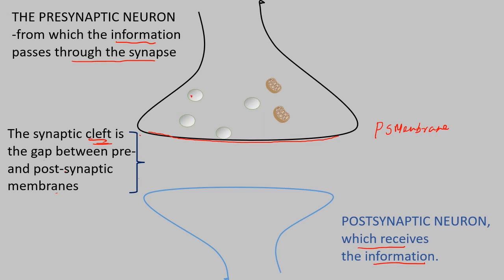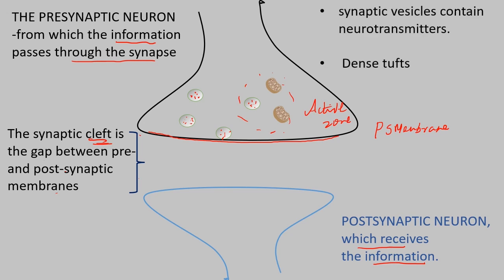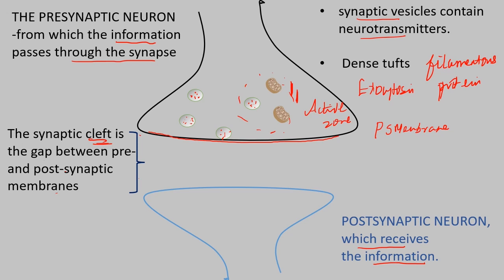In the pre-synaptic neuron, you can see numerous neurotransmitter vesicles. In the area with mitochondria, we have the active zone where neurotransmitter release occurs. Synaptic vesicles contain neurotransmitters like dopamine and acetylcholine. Dense filamentous proteins help the synaptic vesicles, and exocytosis helps release the neurotransmitters.